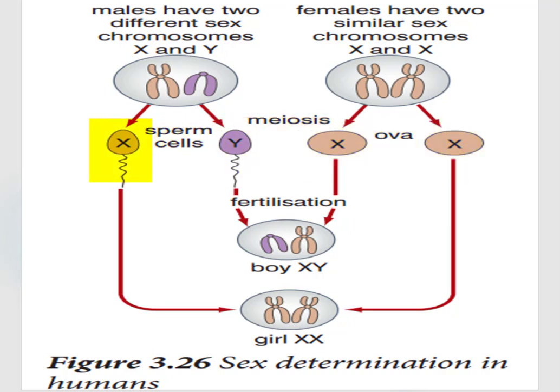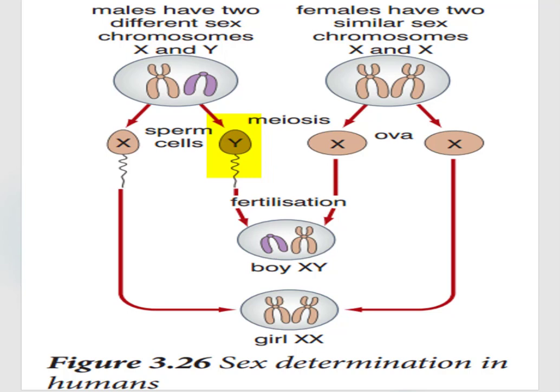If an X chromosome-containing sperm cell fertilizes an ovum that also contains an X chromosome, the offspring could be a girl with XX chromosomes. If a Y chromosome-containing sperm cell fertilizes an X chromosome-containing egg cell, the offspring could be a boy with XY chromosomes.